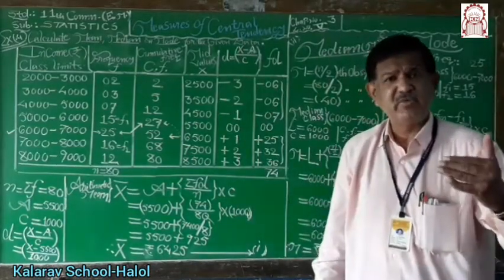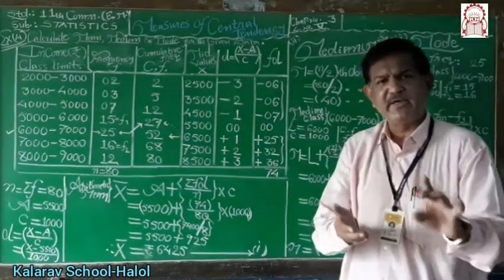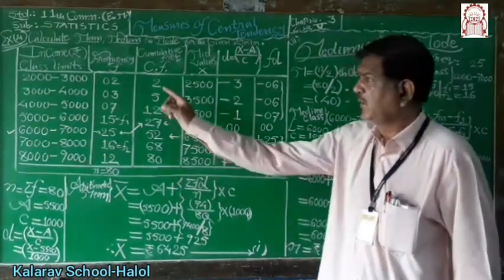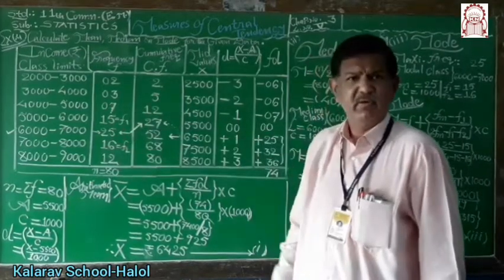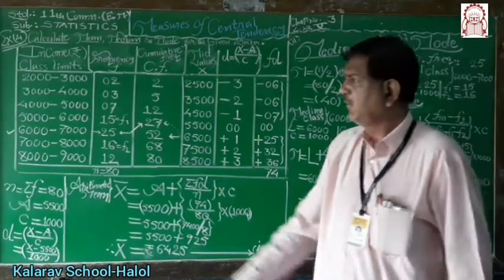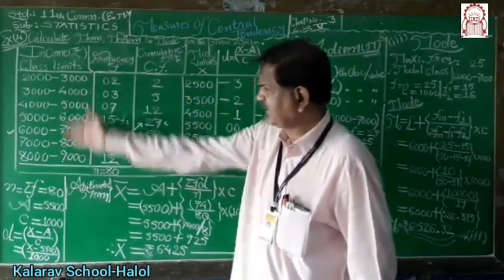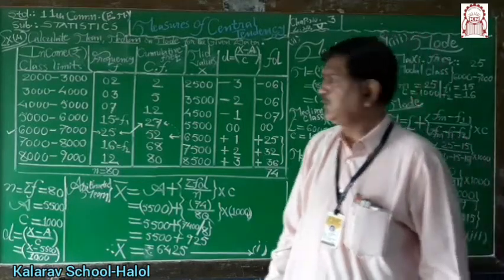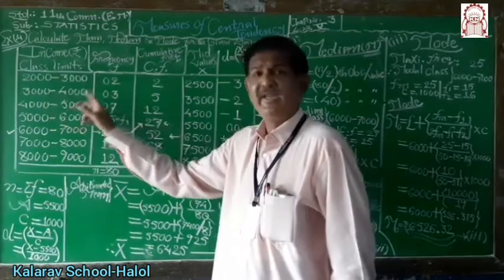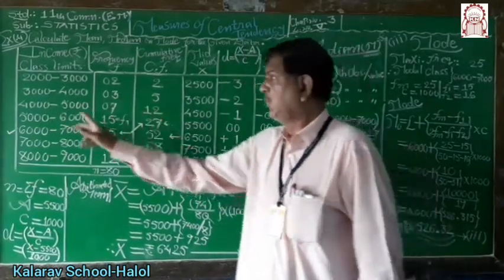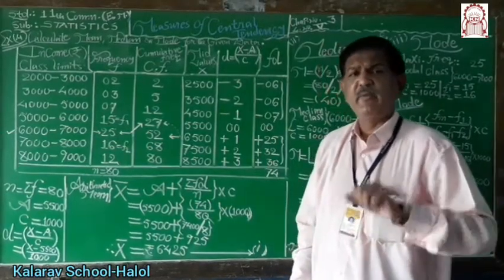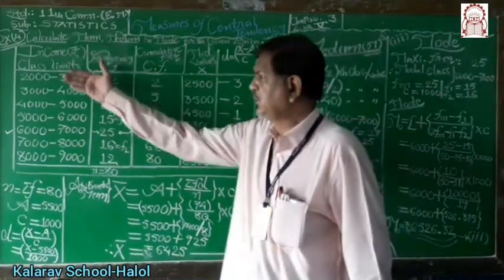Frequency distributions are of two types: discrete type and continuous type. This is a continuous type frequency distribution. Classes are also of two types: exclusive type and inclusive type. The classes given here — 2000 to 3000, 3000 to 3999, 4000 to 4999 — are exclusive type classes.